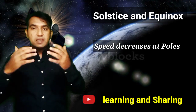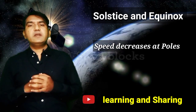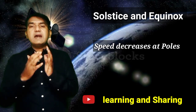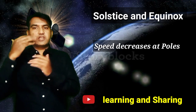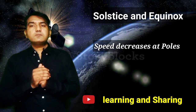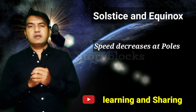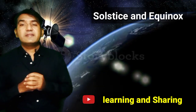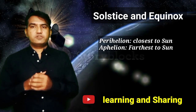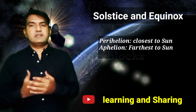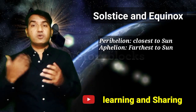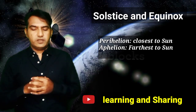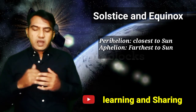There is another position we discussed in the previous video. Whenever earth is close to the sun, we call that perihelion. When earth is away from the sun, it is called aphelion. These are two more phenomena. Now we are coming to our main topic, which is the equinox and the solstice.